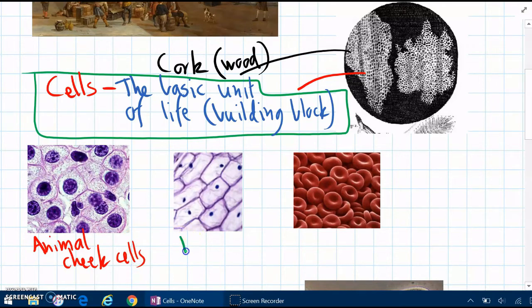And in the next one, we've got some plant cells. And these are from an onion. If you slice a really thin slice of an onion, this is what it looks like. And then you've probably seen these as well. These are red blood cells from humans.